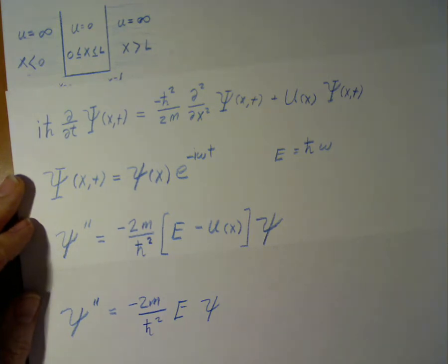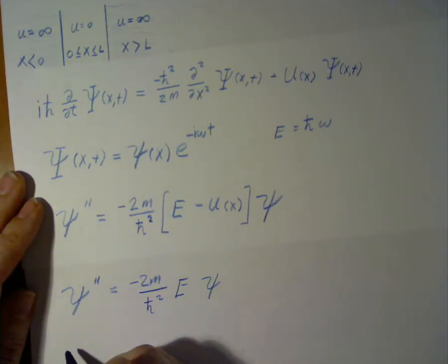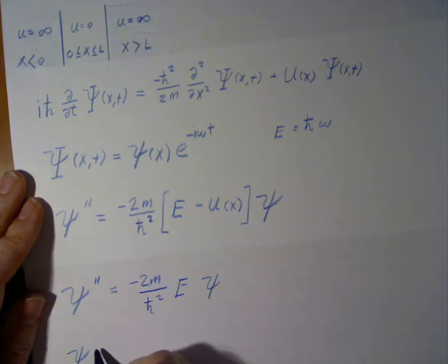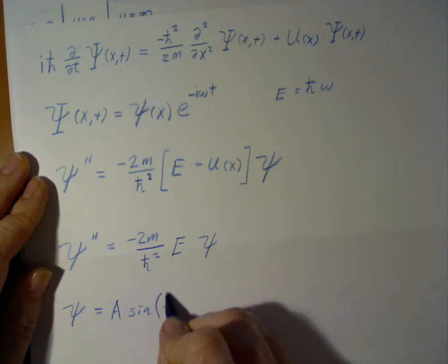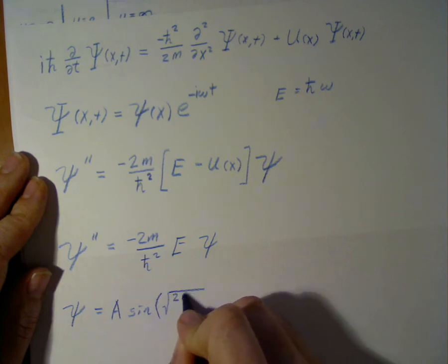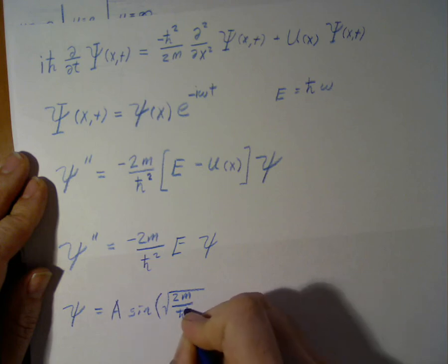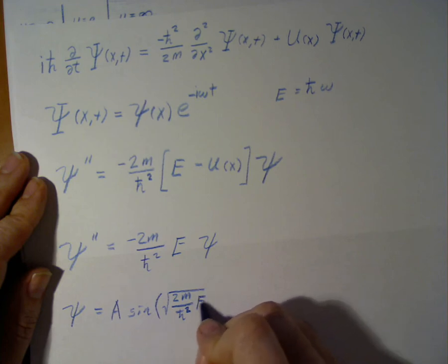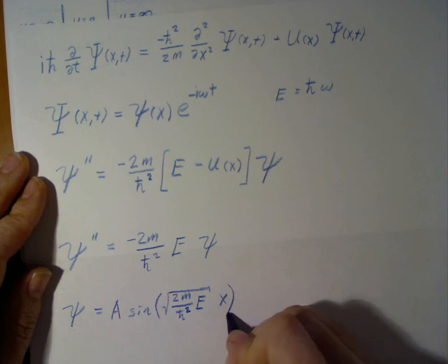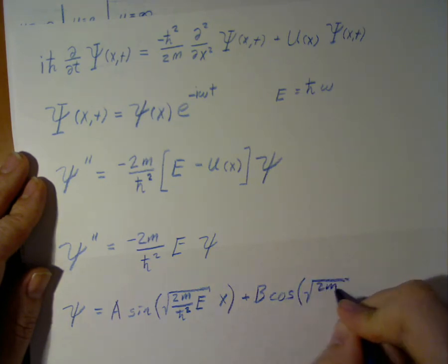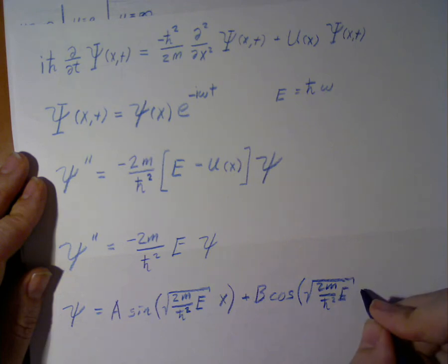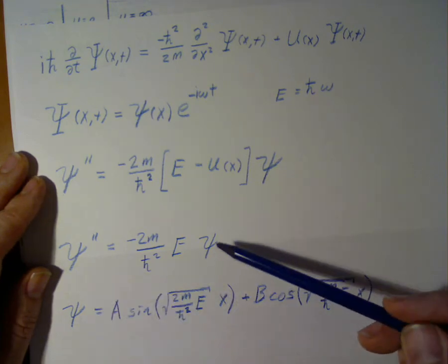This can be solved with a general formula. In general, the solution must be sines and cosines. So we'll write out our solution to be A sine of square root 2m over h-bar squared E times x, and likewise for the cosine function. Notice that if we take the second derivative of these functions, we get back the original function times our constants.